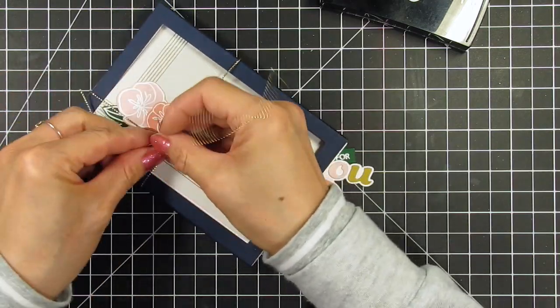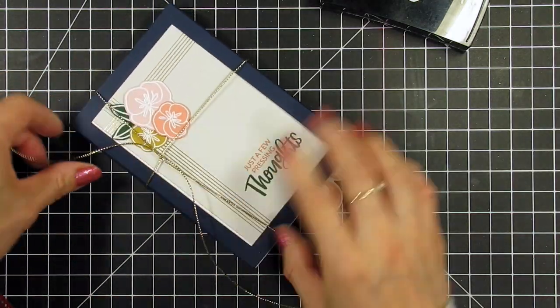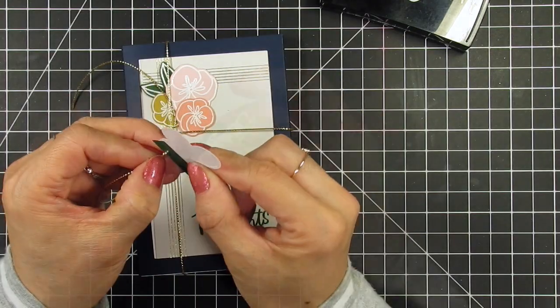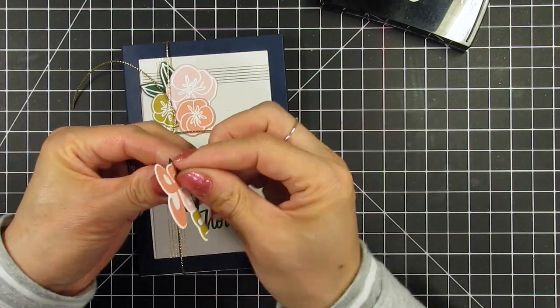Then I string one end through the hole in the tag and finish with the knot and bow. I cut off the excess so the tails match and my project is done.